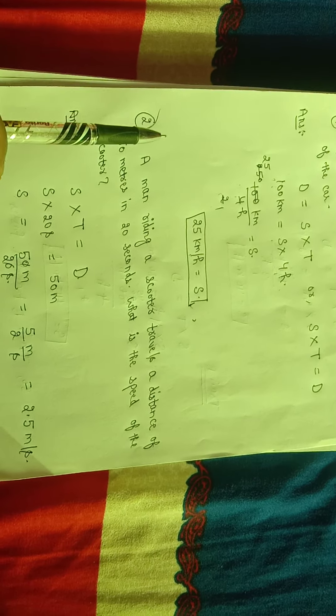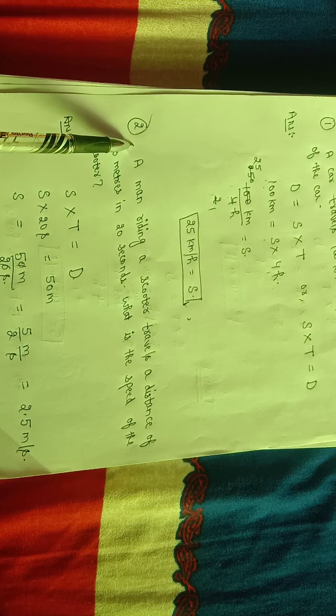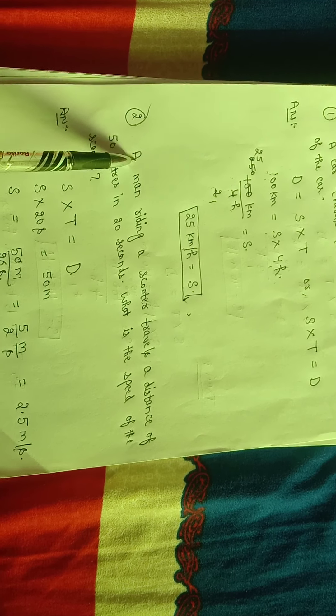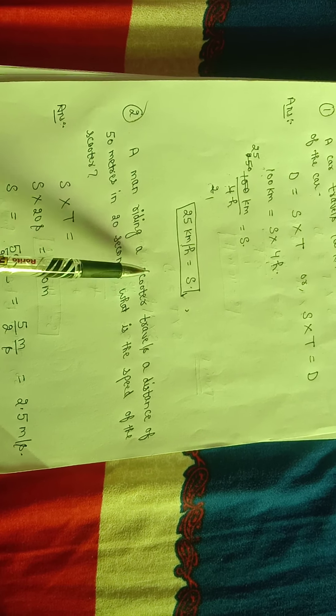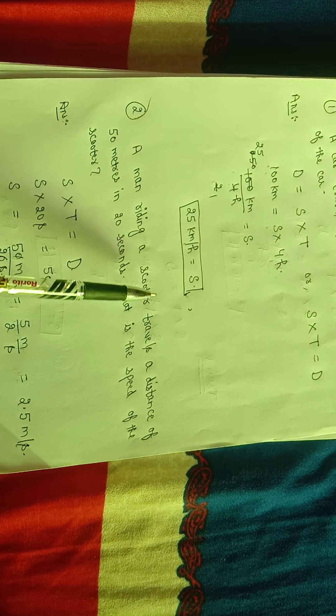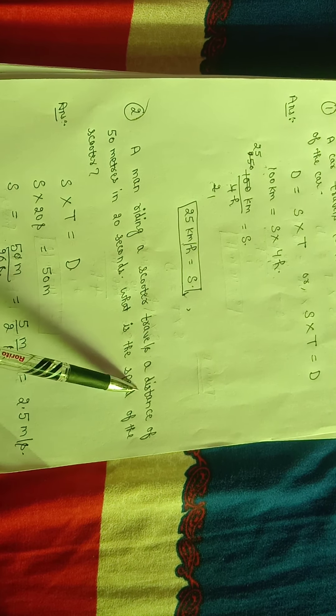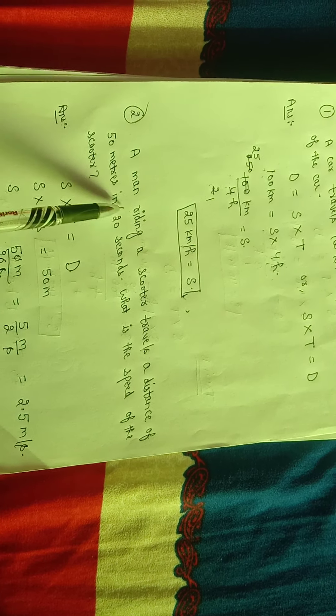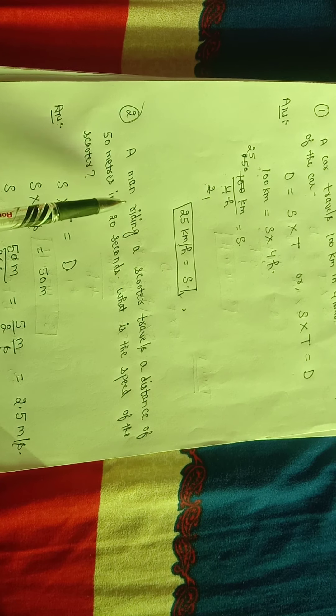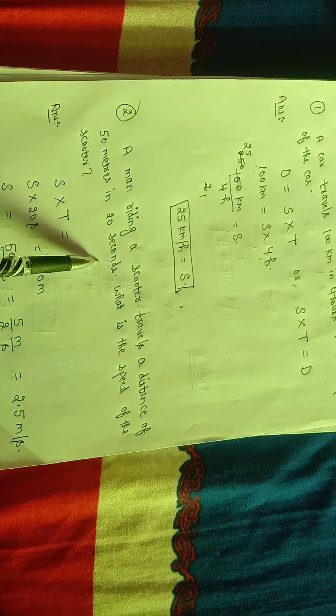Have you any doubt? Okay. Next, second numerical: a man riding a scooter travels a distance of 50 meters in 20 seconds. Find the speed of the scooter.